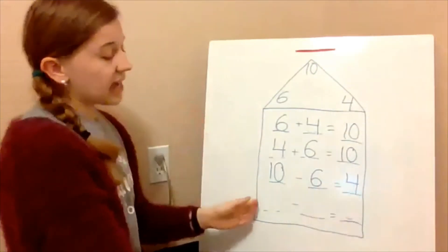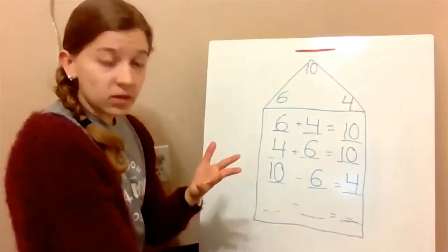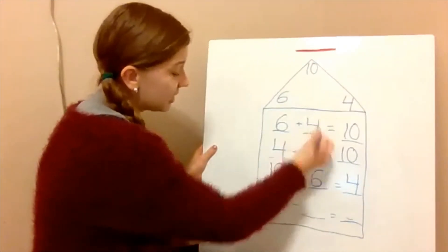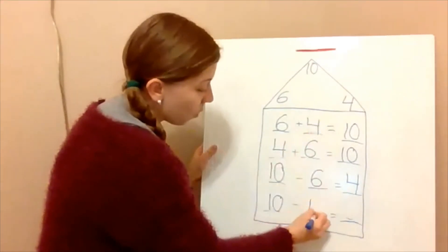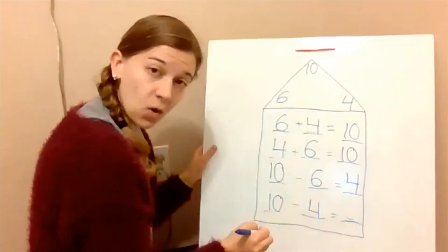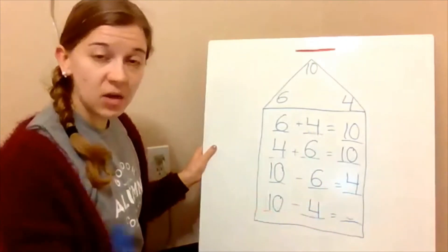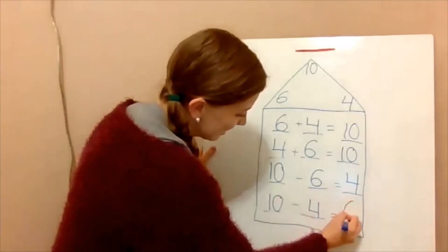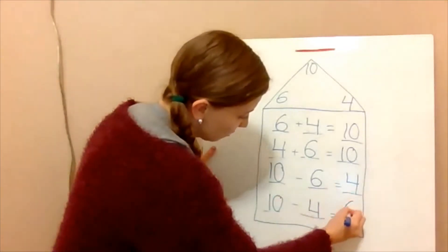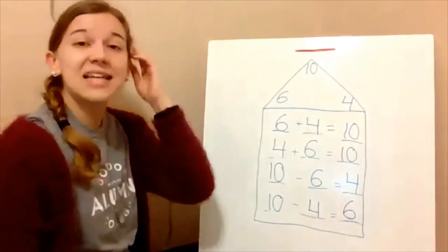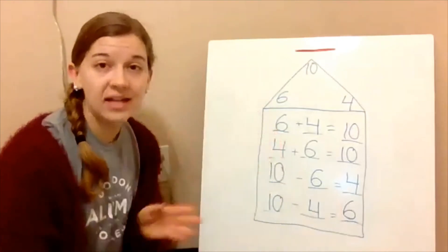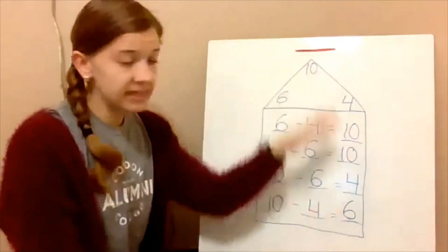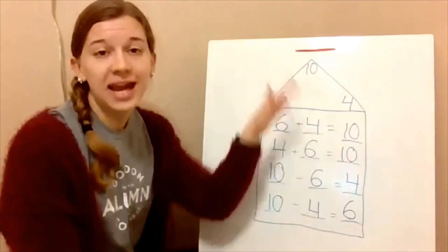And then again with subtraction, we begin with the highest number: ten minus four equals six. If you have ten and you take away four, you're left with six. So this is a fact family — these all belong in the same fact family house.